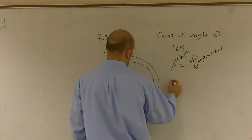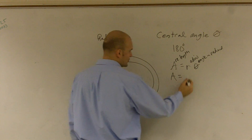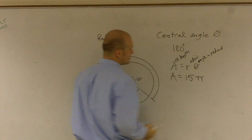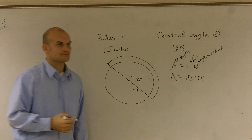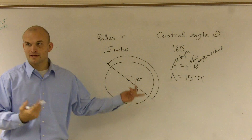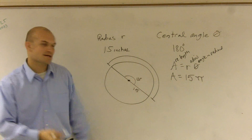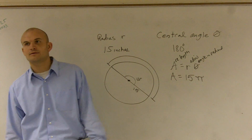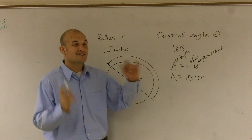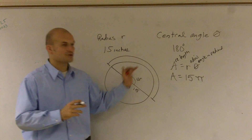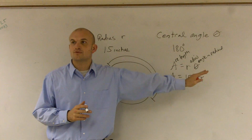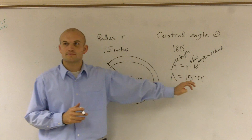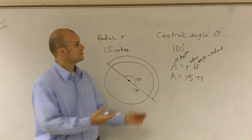So I can say my arc length, a, is equal to 15 times pi. You just do 15 times pi and then you get your answer, and a decimal approximation in there. Just make sure, guys, when you're doing arc length, you're dealing with radians, not degrees. All right, that's it.